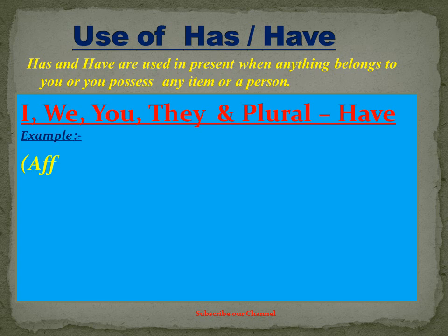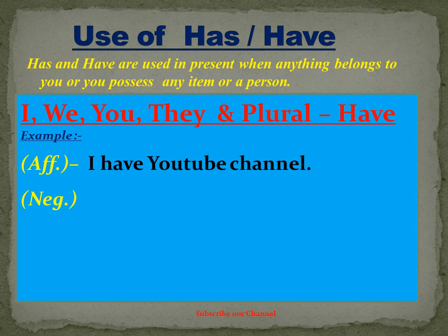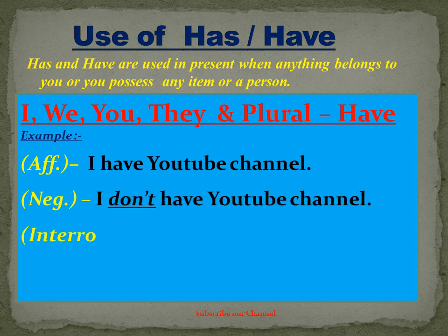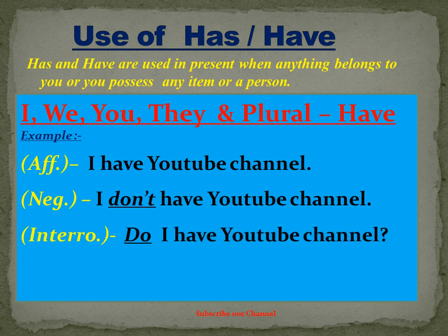With subjects I, We, You, They, we use 'have'. Example: I have a YouTube channel. Negative: I don't have a YouTube channel. Interrogative: Do I have a YouTube channel? Interrogative plus negative: Don't I have a YouTube channel?